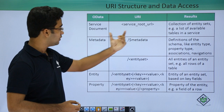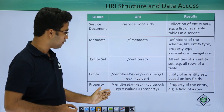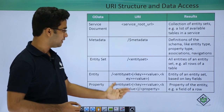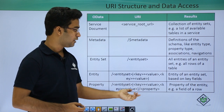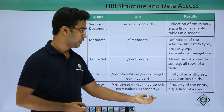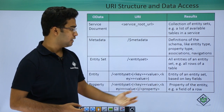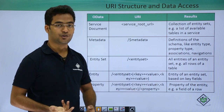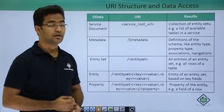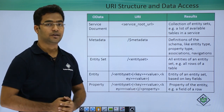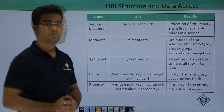We provide the service URL, then a slash, then the entity set, then the key-value pair, and then the property itself — which is a field of a row. This was the URL structure and how to access data using the OData service.